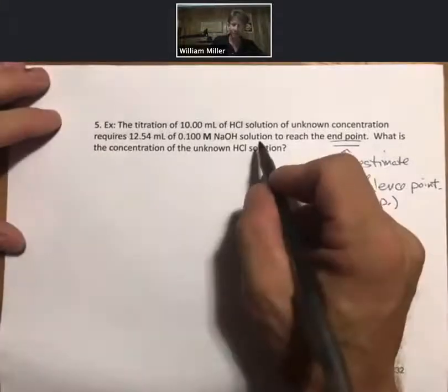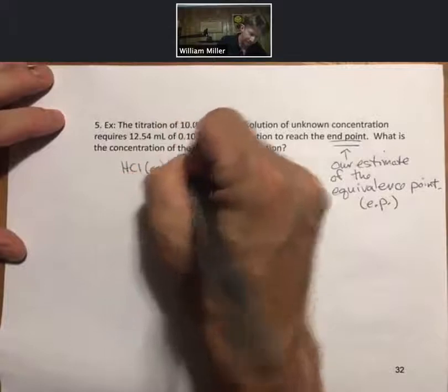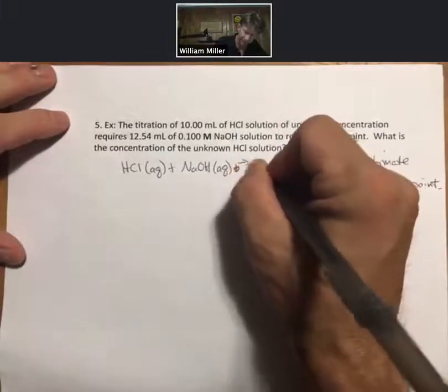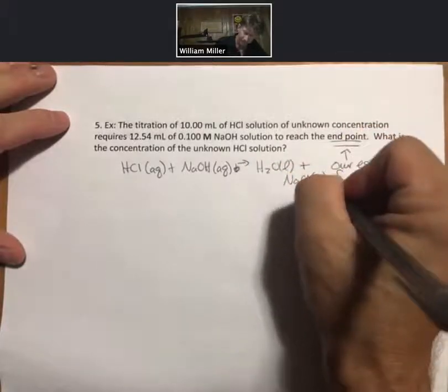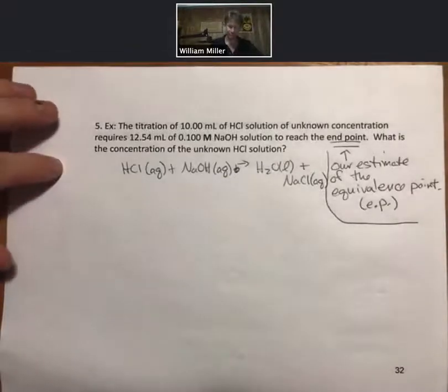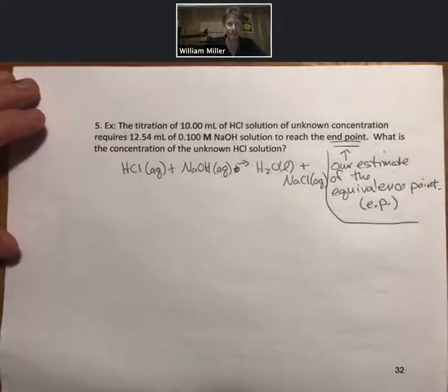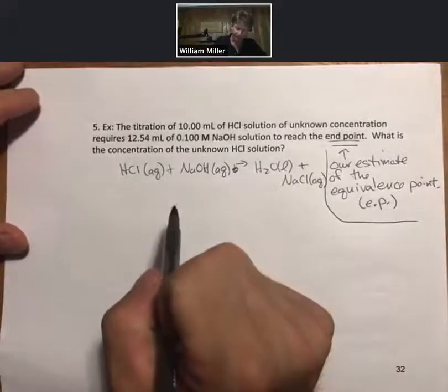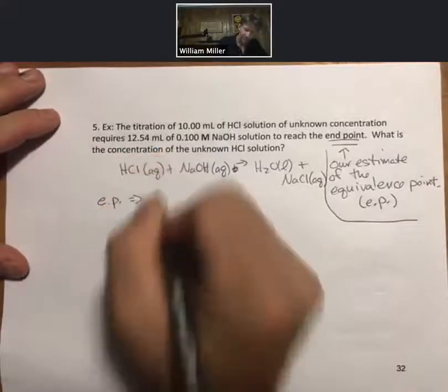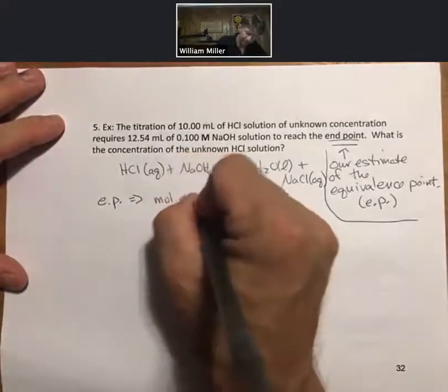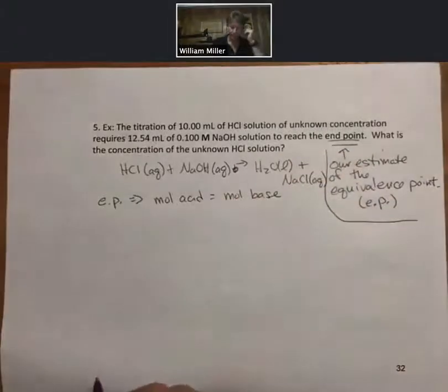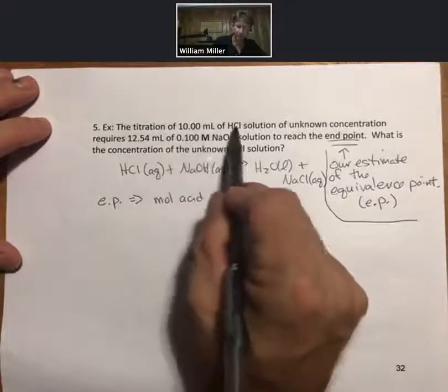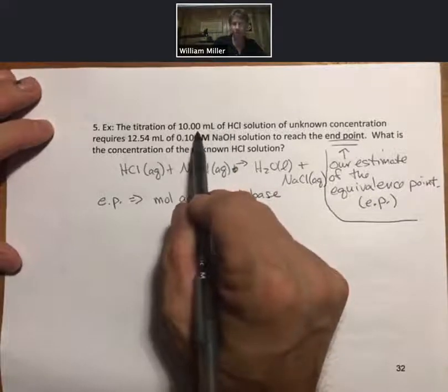In order to do this, it will help to have a balanced reaction. It's one that we're familiar with. We see they're all one coefficients. The equivalence point means that moles of acid equals moles of base. We have enough information to find our moles of sodium hydroxide. We have the volume of our hydrochloric acid, and we can eventually find our concentration of our hydrochloric acid.